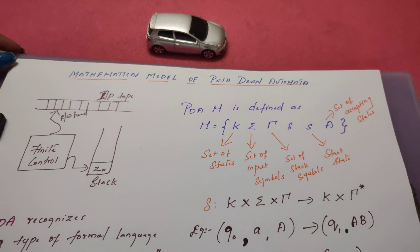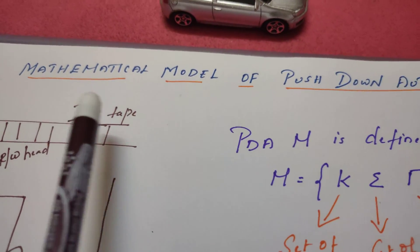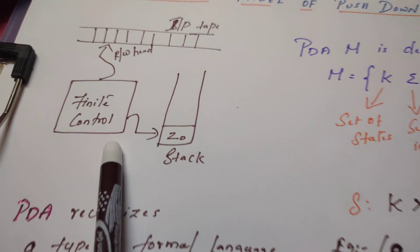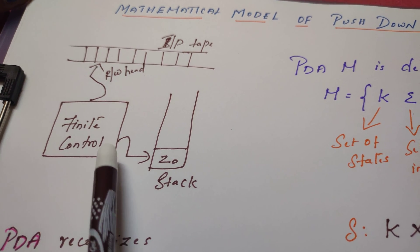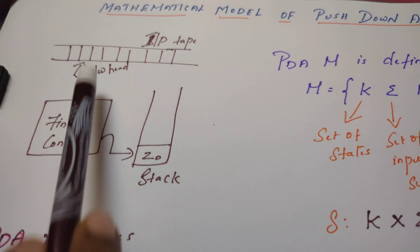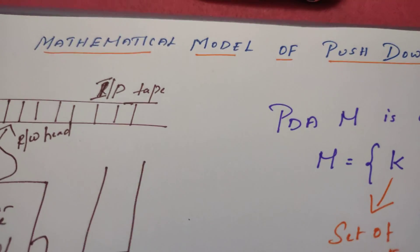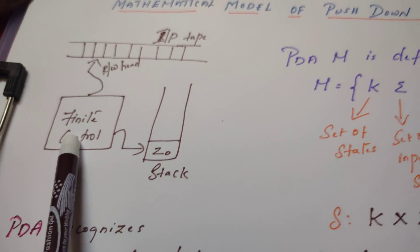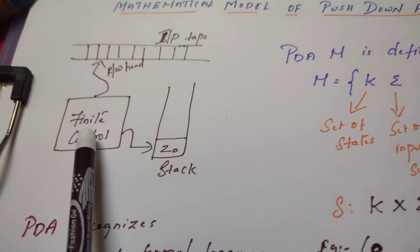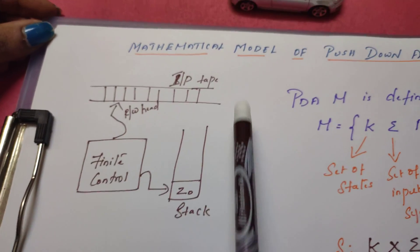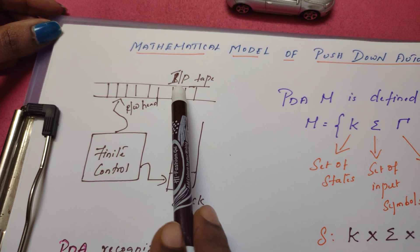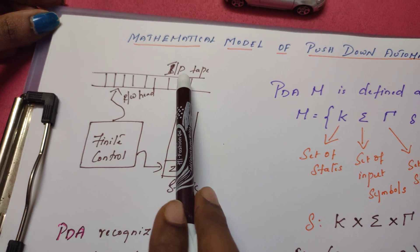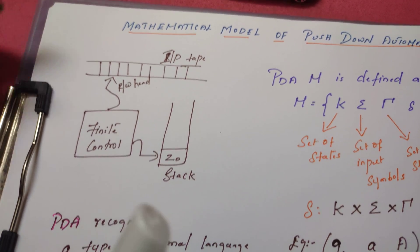This is a block diagram of pushdown automata. It has three components: finite control, input tape, and stack. Finite control is the house of logic; it contains a program based on which this entire machine works. The input tape is an infinite memory divided into many cells, each cell able to hold only one symbol at a time.